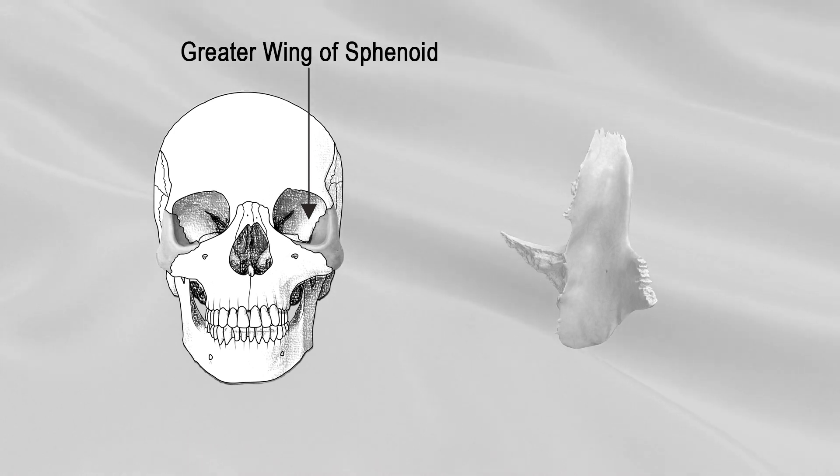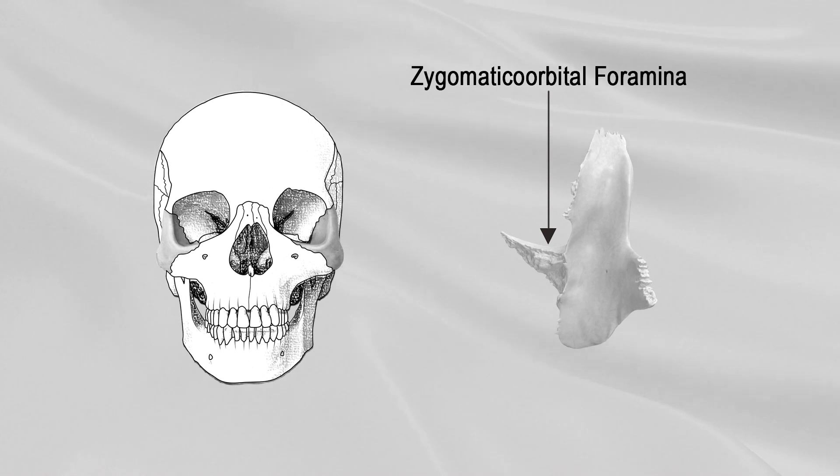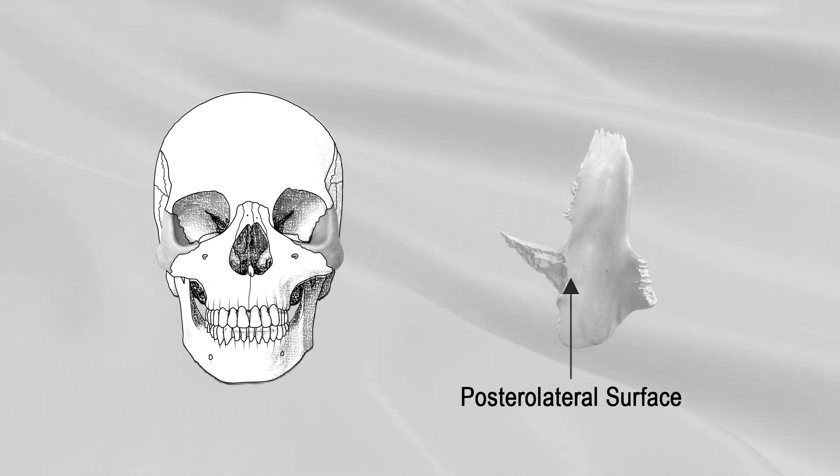On it are seen zygomatico-orbital foramina, which transmit the zygomaticotemporal and zygomaticofacial nerves. Its posterolateral surface, smooth and convex, forms parts of the temporal and infratemporal fossae.